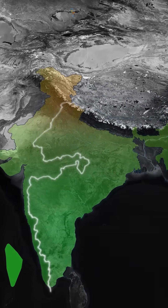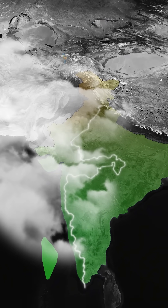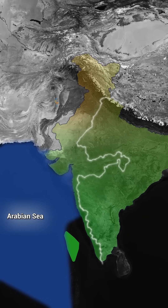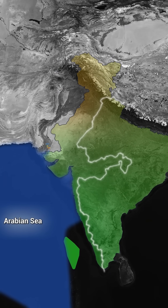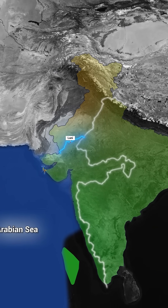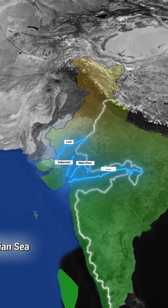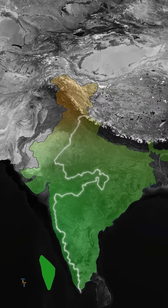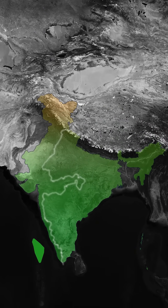Conversely, rainwater falling to the west drains into the Arabian Sea through rivers such as Loni, Sabarmati, Mahi, Narmada, and Tapti. But what makes this divide so special?